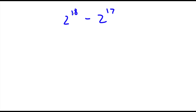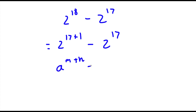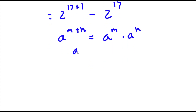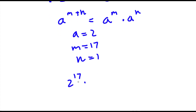Alright, so for the bonus problem: 2 to the power of 18, this is equal to 2 to the power of 17 plus 1. So now I have 2 to the power of 17 plus 1 minus 2 to the power of 17. Now, if I have something in the form a to the power of m plus n, this is equal to a to the power of m times a to the power of n. So in this case a is 2, m is 17, and n is 1. So I have 2 to the power of 17 times 2 to the power of 1, minus 2 to the power of 17.